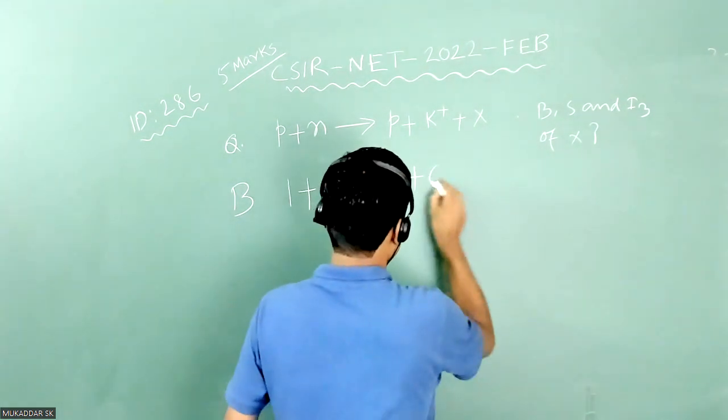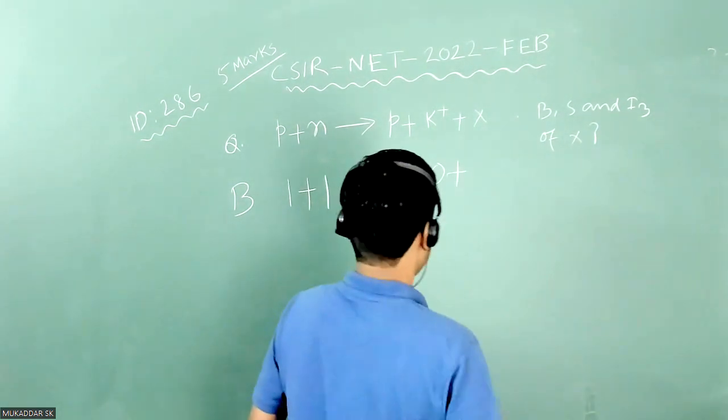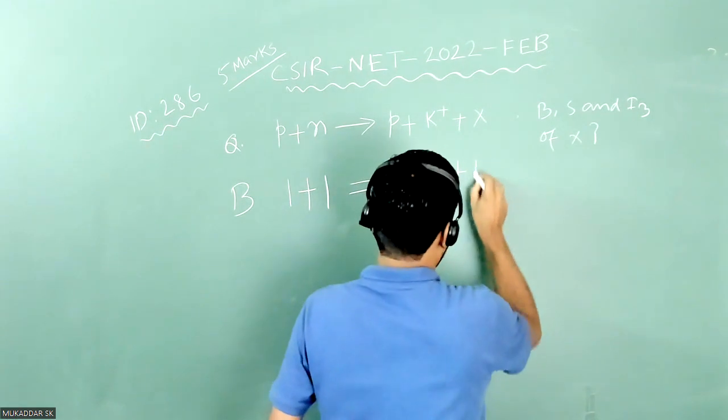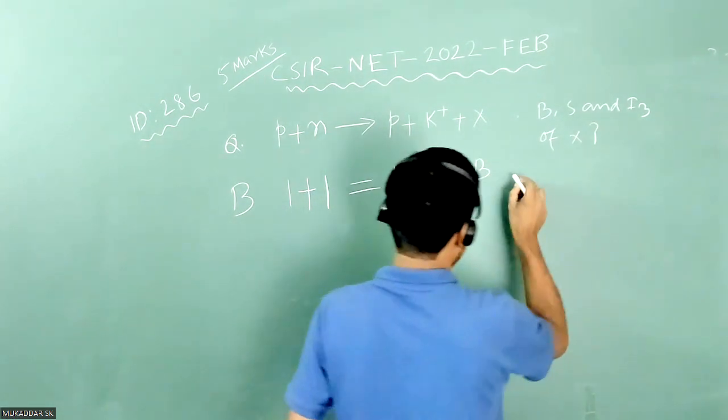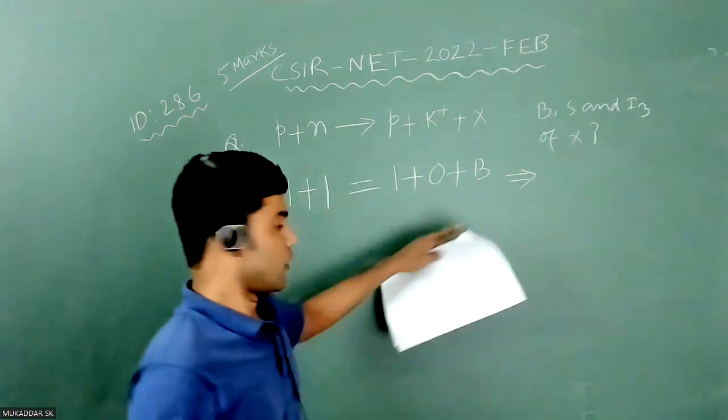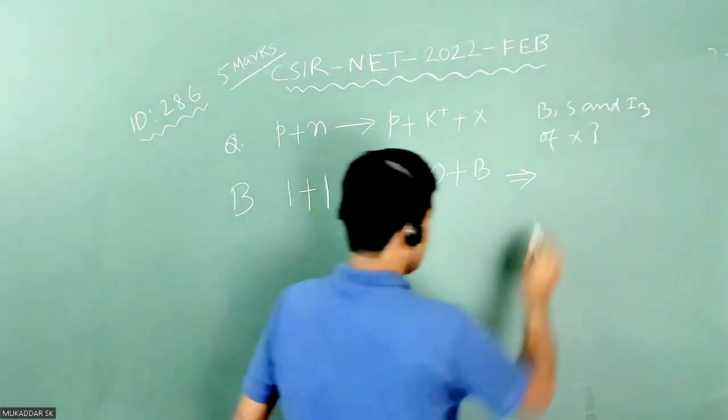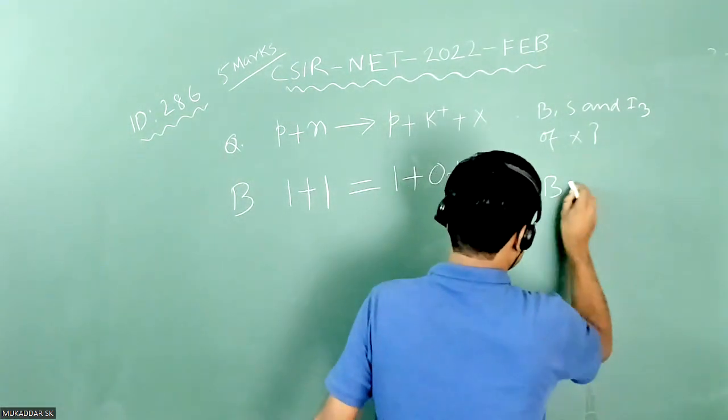K on is not baryon, so it will be zero. And let us assume for x particle that B quantum number is B. So this equation gives you that B quantum number of x particle is simply one.